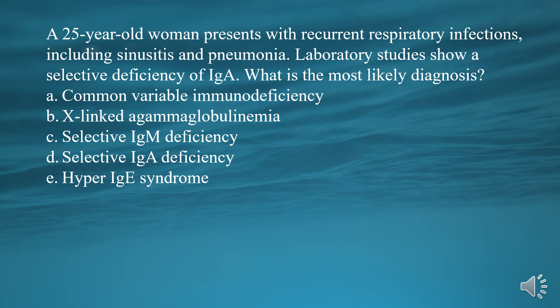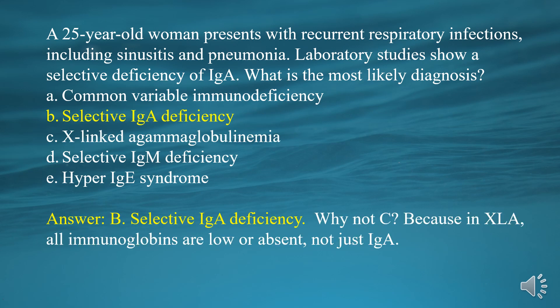A. Common variable immunodeficiency. B. X-linked agammaglobulinemia. C. Selective IgM deficiency. D. Selective IgA deficiency. E. Hyper-IgE syndrome. Answer: D. Selective IgA deficiency.